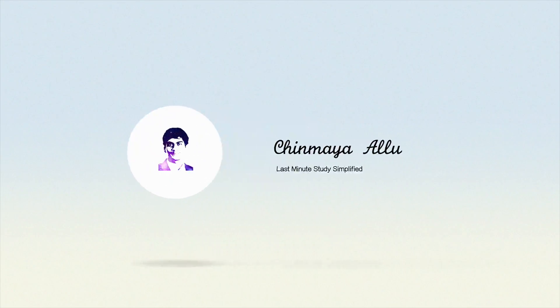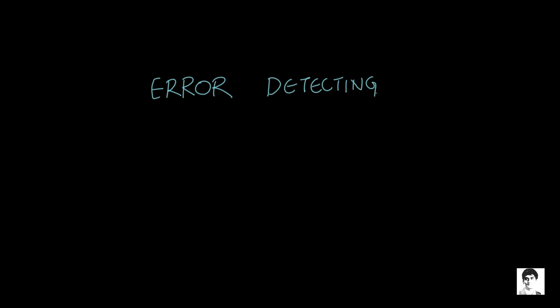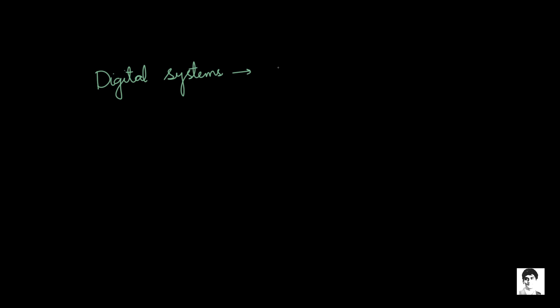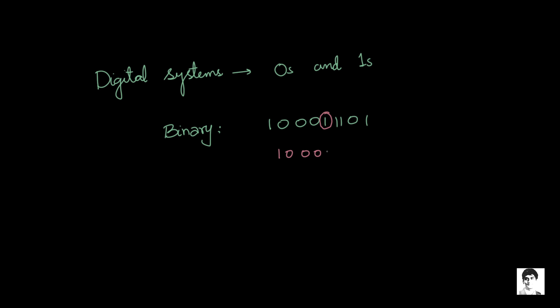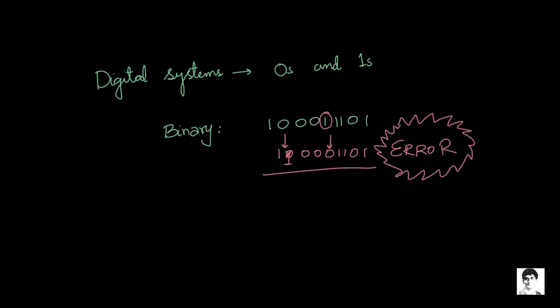In this video we are going to look at adding a parity bit to determine an error. But before we delve into the topic, what exactly is an error-detecting code? We know digital systems transmit data in the form of zeros and ones. Let's say I want to transmit this binary word: 1 0 0 0 1 1 1 0. While the transmission was taking place, one of the ones probably came out as zero, or one of the zeros came out as one — this is what we call an error. We have codes to detect these errors, and these codes are called error-detecting codes.